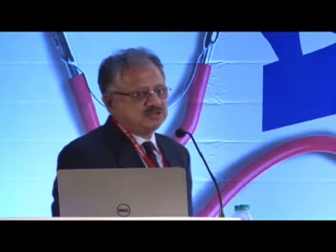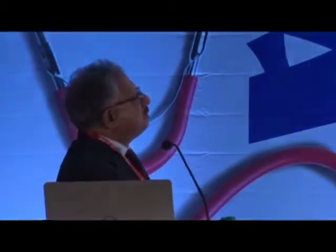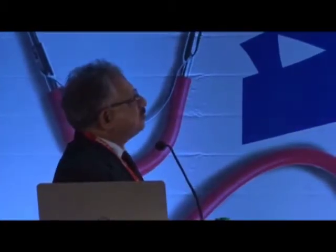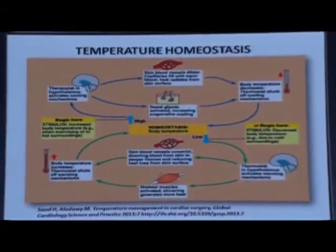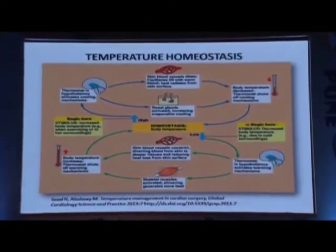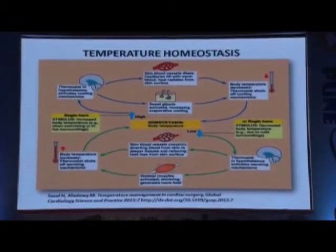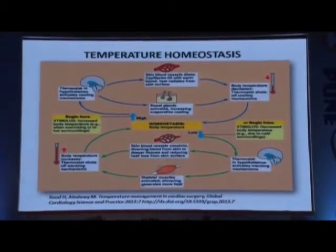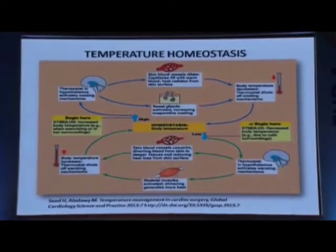Coming to basic physiology, what are we looking at? The patient regulates his own temperature. When temperature is low, it's cold, so the thermostatic hypothalamus takes over the thermostatic mechanisms. There is shivering, unless the patient is paralyzed, which produces heat, and there is resetting of the thermostat.